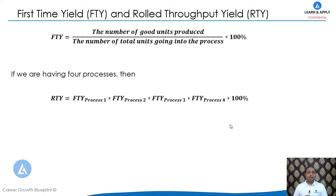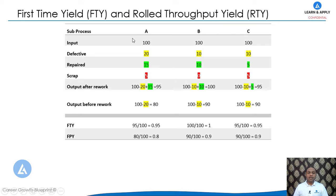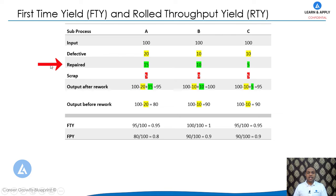Let's take an example to understand how to calculate FTY and RTY. There are three processes: Process A, Process B, and Process C. For each process the number of inputs is 100. From Process A the number of defectives is 20, from Process B it is 10, and from Process C it is 10.